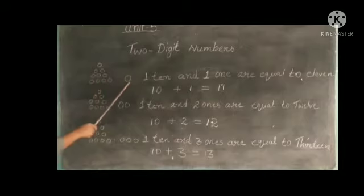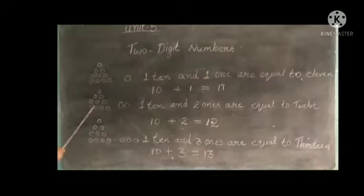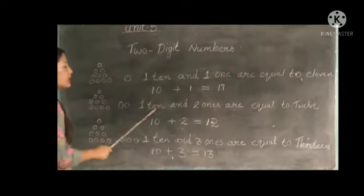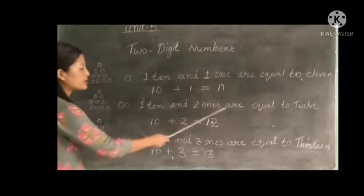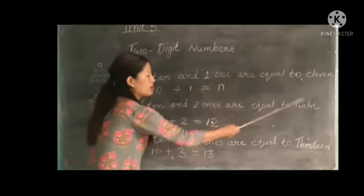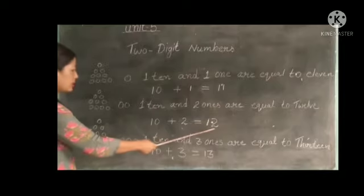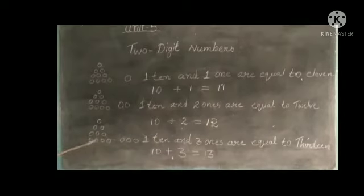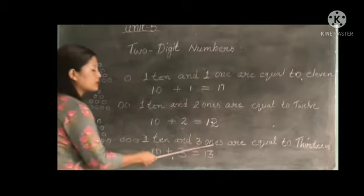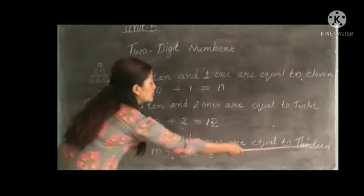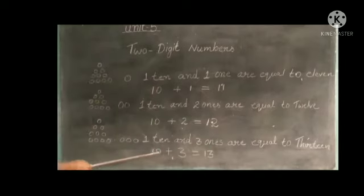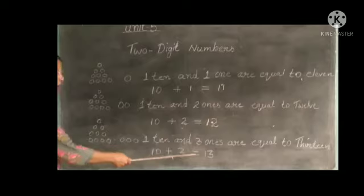10 plus 1 are 11. Again, 10 plus 2. 1 ten and 2 ones are equal to 12. 10 plus 2 are equal to 12. Again, 10 plus 3 are 13. 1 ten and 3 ones are equal to 13. 10 plus 3 are 13.